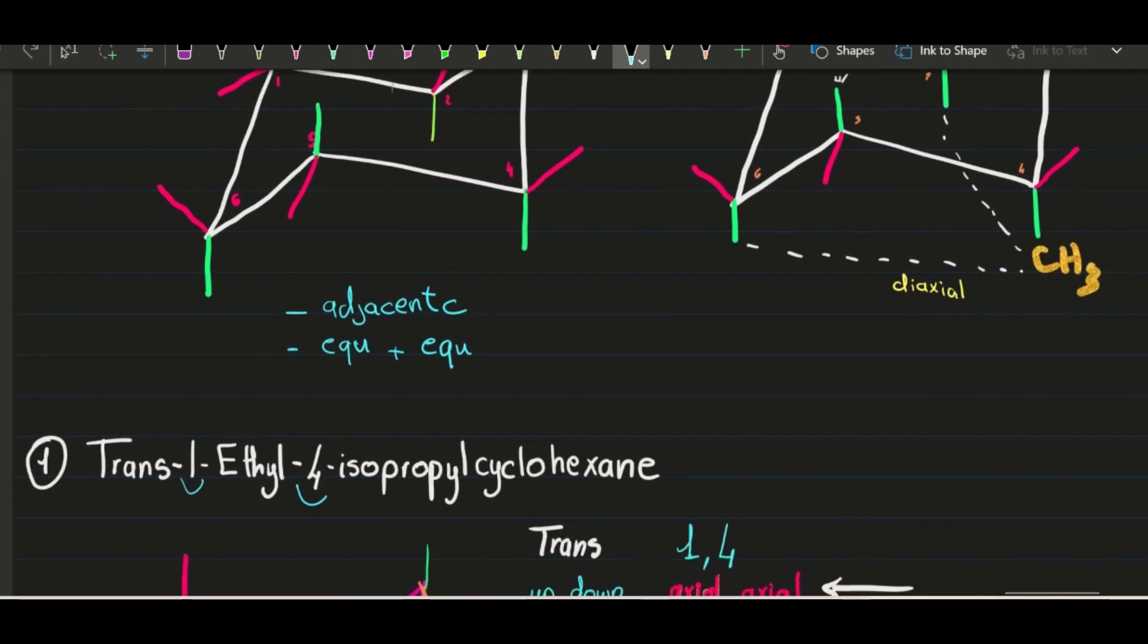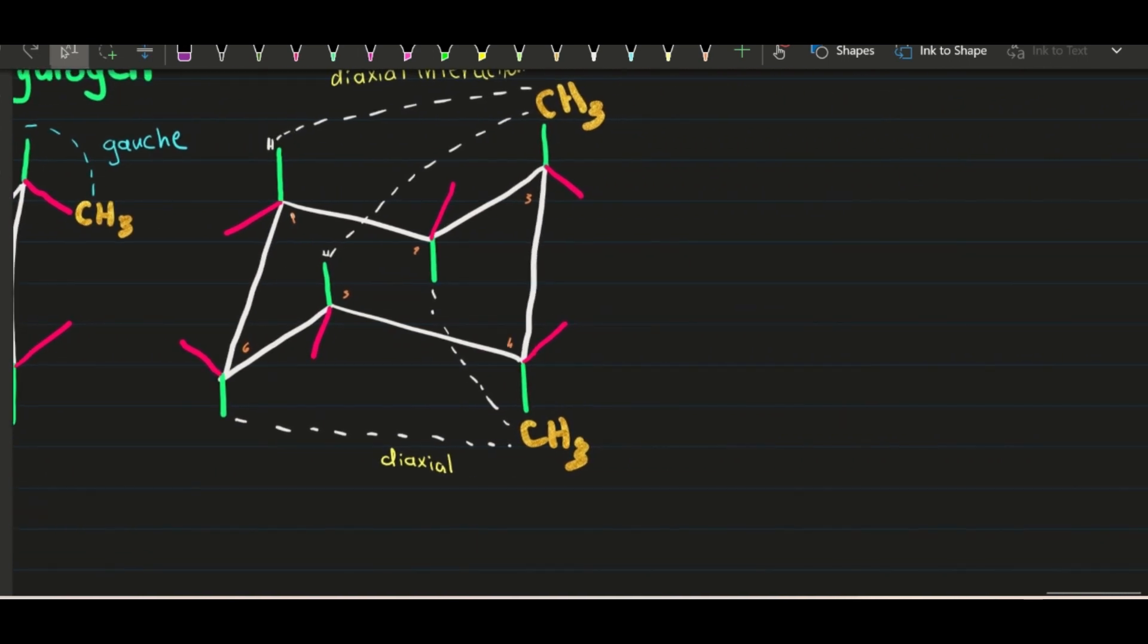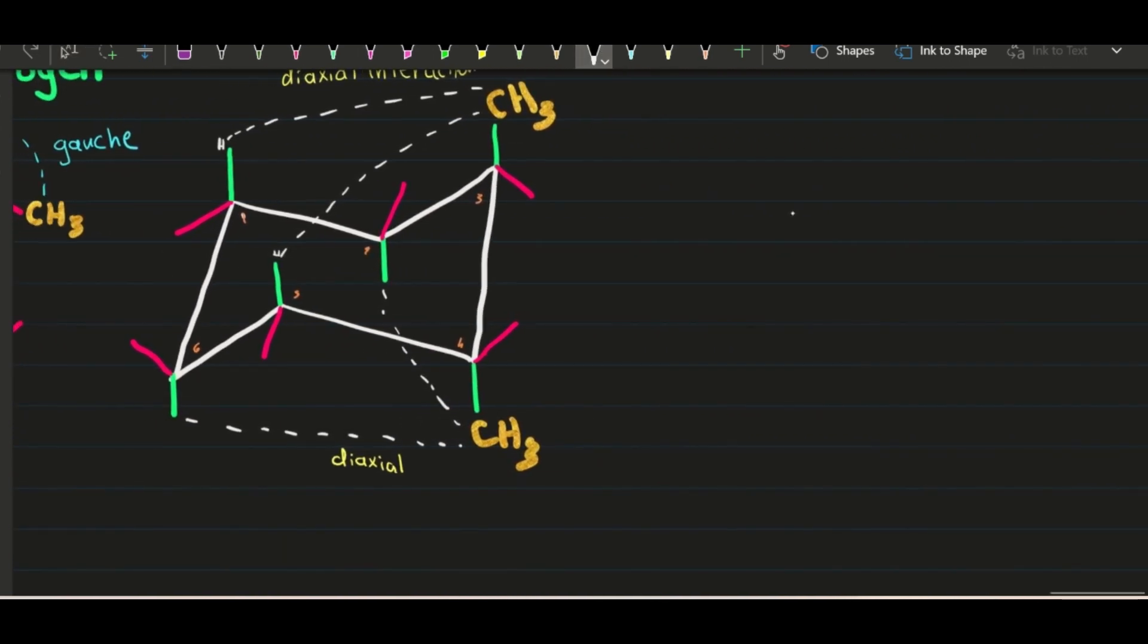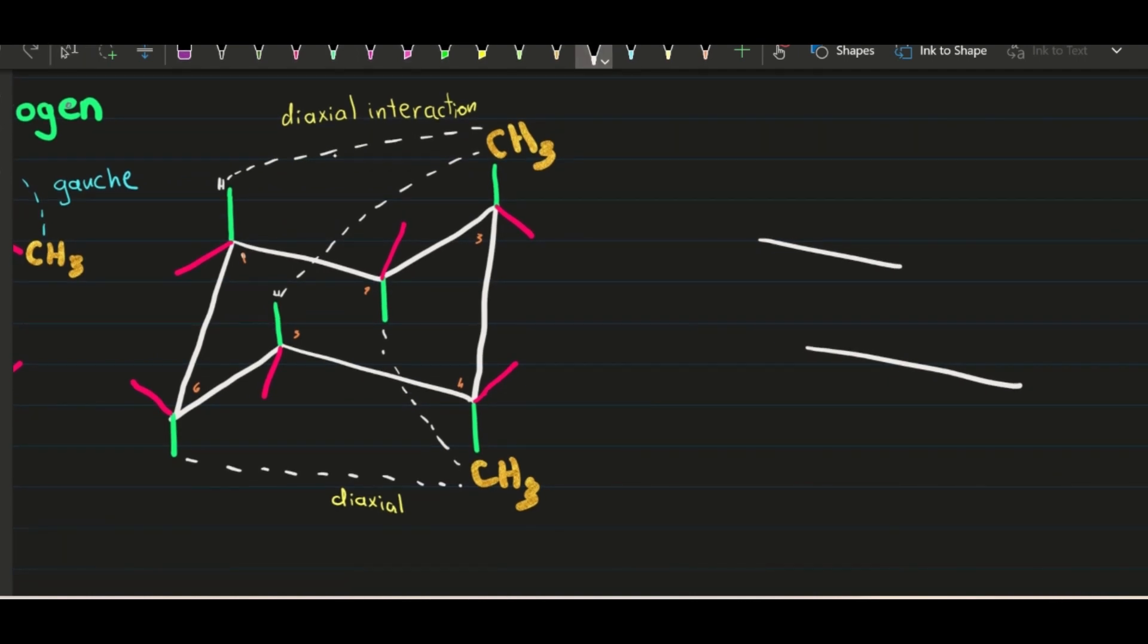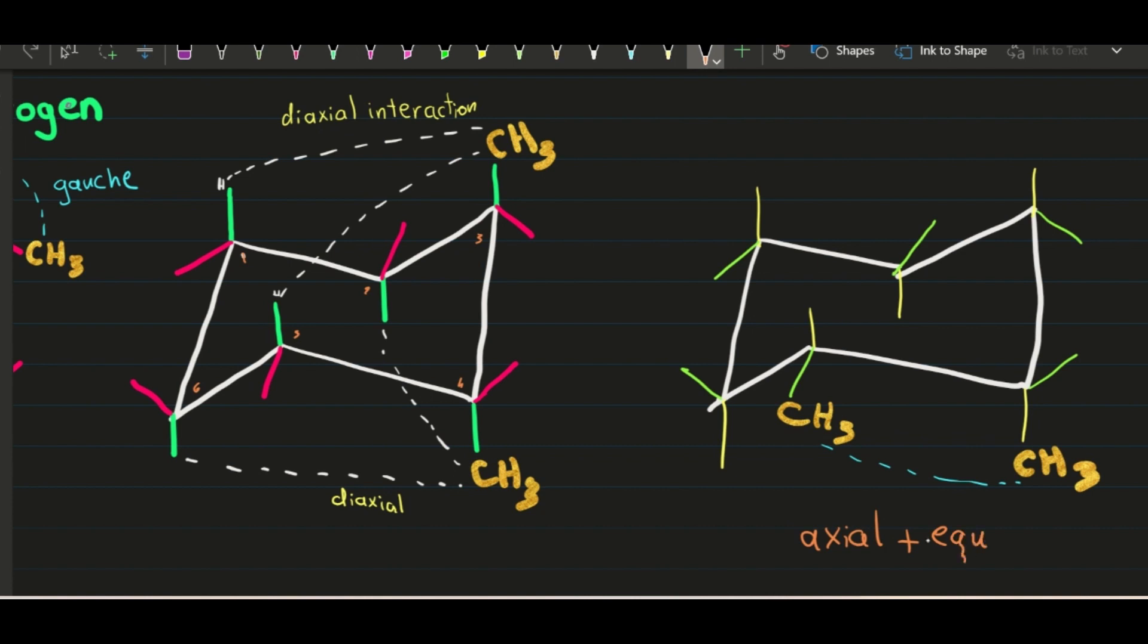Let's draw another one here to give you another example. And gauche cannot happen diaxially. No diaxial gauche because we already have diaxial interaction. Let's draw another one here. So we can also, let's see, we have CH3 here. That's on axial. And another CH3 here, that's on equatorial. So this is also gauche. It can also happen axial and equatorial, not both axial position. So that's also gauche.